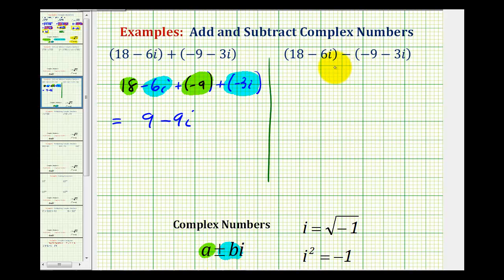Looking at our second example, we're going to clear the parentheses. When subtracting, we can think of this as distributing a negative 1. We're going to have 18 minus 6i, and then because we're subtracting, this is going to be plus 9. And because we're subtracting, this is going to be plus 3i.